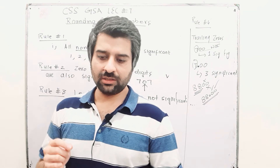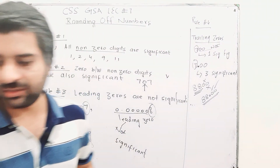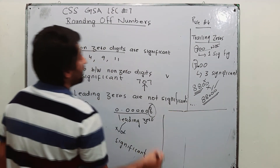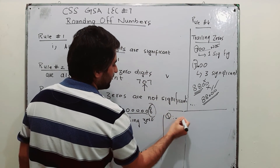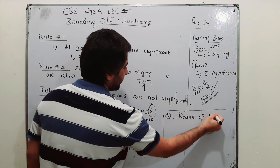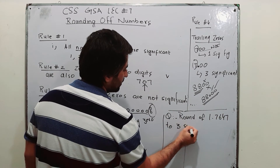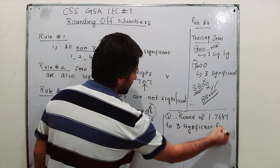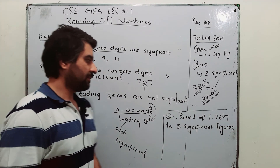Now let us take an example of how to express an answer in a given number of significant figures. If I ask you to round off 1.7647 to 3 significant figures, what is the process? First, count the significant figures: 1, 7, 6, 4, 7 — all non-zero, so we have 5 significant figures. We want 3.